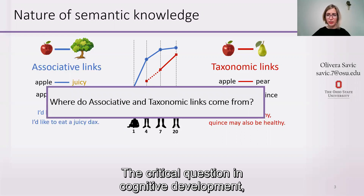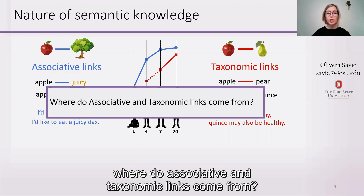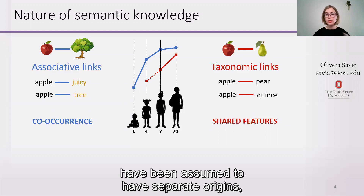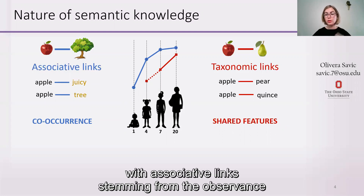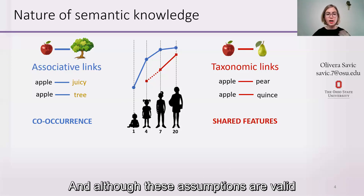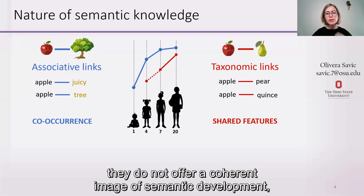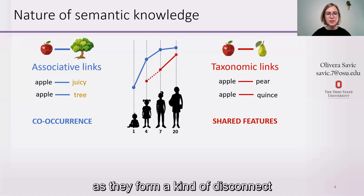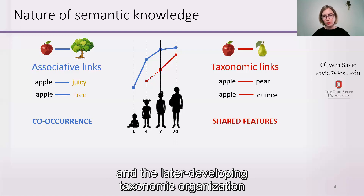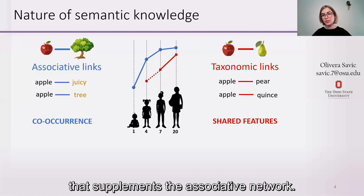The critical question in cognitive development and of this research is to understand where associative and taxonomic links come from. Traditionally, they have been assumed to have separate origins, with associative links stemming from the observation of co-occurrences and taxonomic links from observation of shared features between items. Although these assumptions are valid, they do not offer a coherent image of semantic development, forming a kind of disconnect between the early-emerging associative organization and the later-developing taxonomic organization.